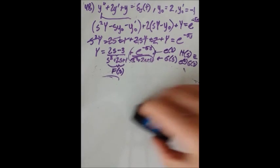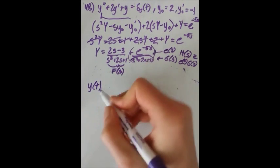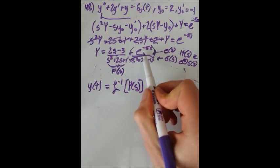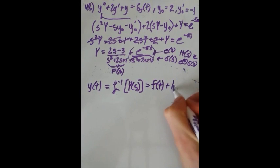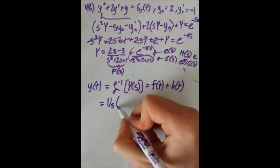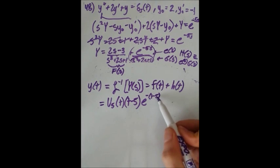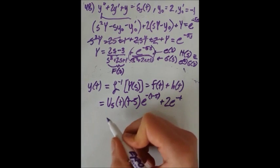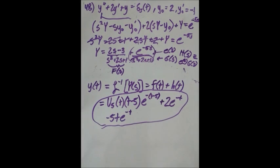Now let's write out the full solution. y(t) is the inverse Laplace transform of uppercase Y(s). Since it's additive, we can inverse transform each part separately: y(t) equals f(t) plus h(t). That gives us 2e to the minus t minus 5t e to the minus t, plus u₅(t) times (t minus 5) times e to the minus (t minus 5), where t goes to t minus 5 for the table formula to hold exactly.